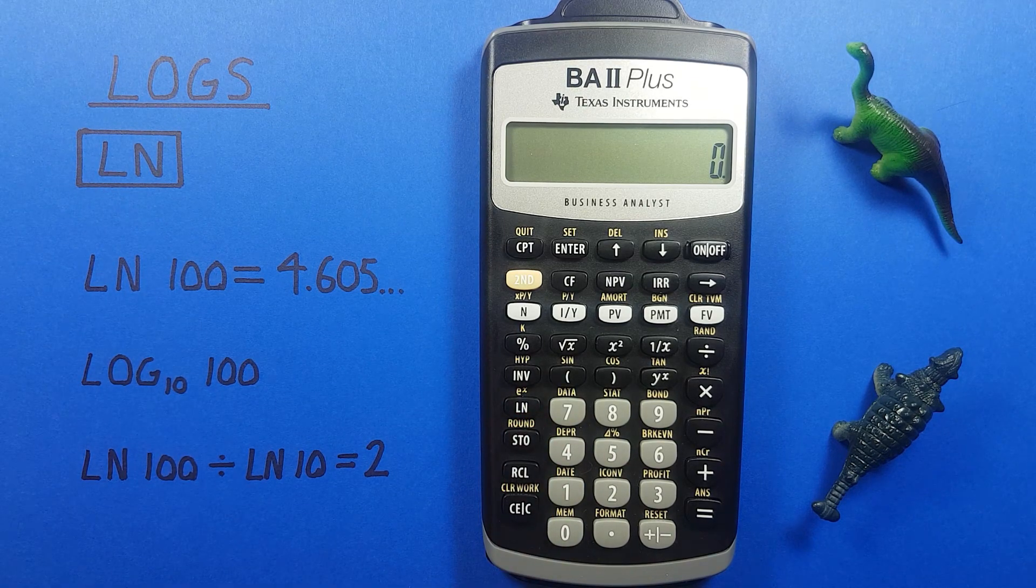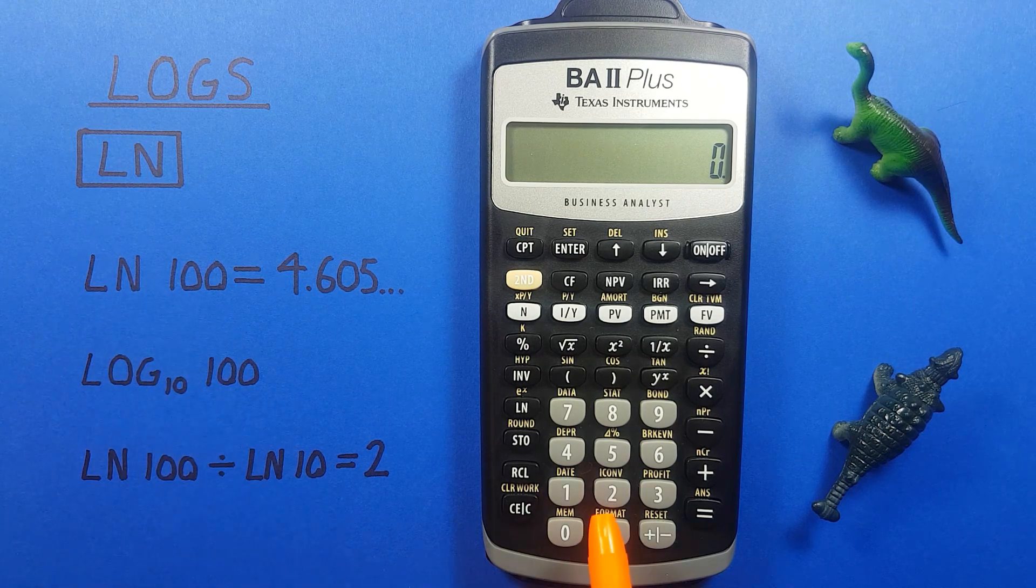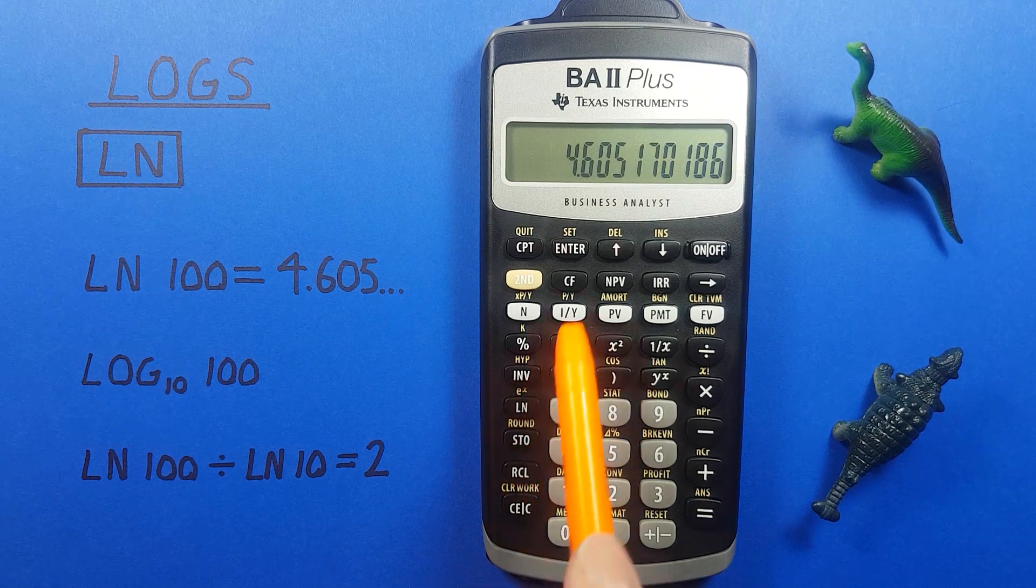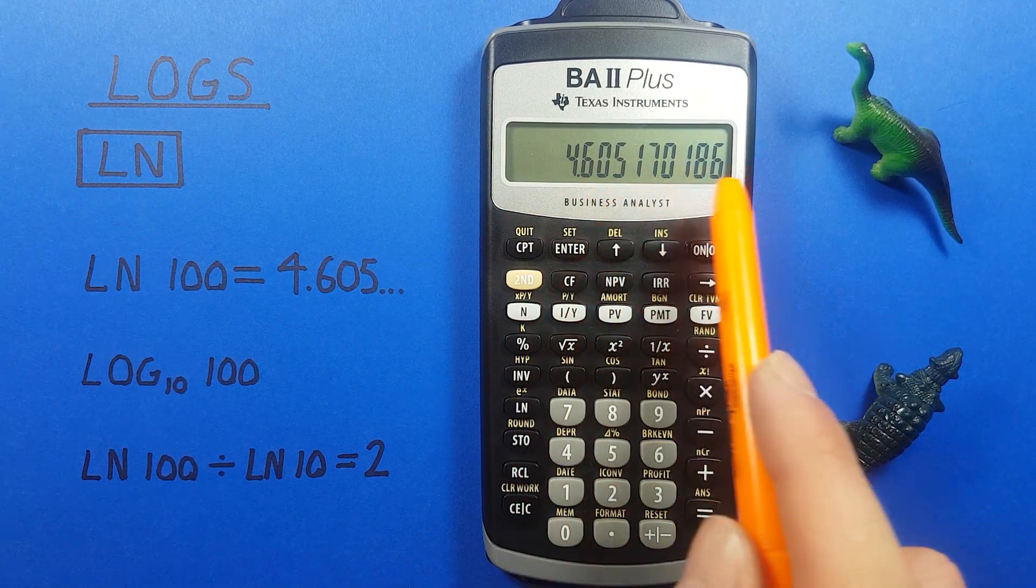So if we want to find the natural log of a number, like say natural log of 100, all you do is enter 100 and then press the LN key. And there you see we get the natural log of 100 is 4.605 and so on.